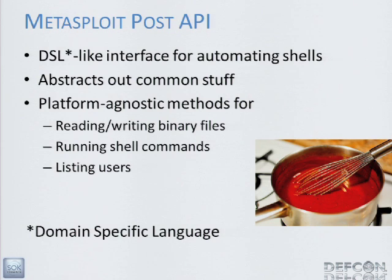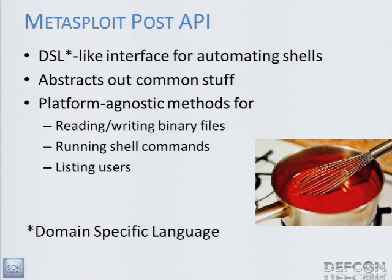The post API is meant to be an abstraction to give all the things you want to do on every shell a simple way to write that code: writing files, running shell commands, listing users, dumping passwords, changing directory. The simple things that a lot of modules will want to do should all be in a library that everything has access to. The look and feel of the API is meant to be like a domain-specific language where it feels sort of like a shell — you just type 'cd directory-name' and that's where it goes.